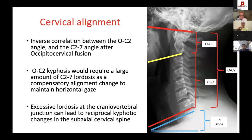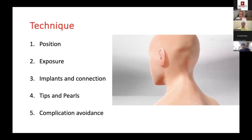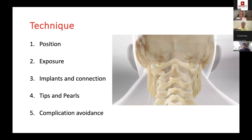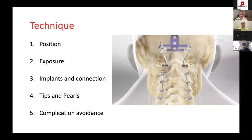The technique involves positioning, exposure, implants, connections, and tips to avoid complications. Positioning is prone with reverse Trendelenburg to reduce venous drainage, with a slightly elevated head. Mayfield clamps, weights, and traction are required in most cases for reduction. Position the patient in a concord-type position with reverse Trendelenburg — cranium above the heart — with weights positioned to allow anesthetist access and the ability to change head position as needed.